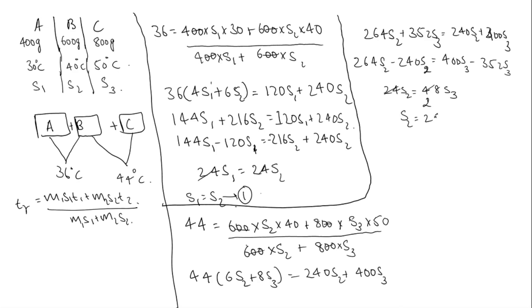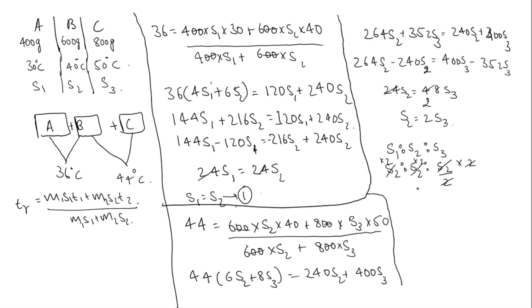So S2 equals 2 times S3. We need the ratio of S1 to S2 to S3. Since S1 equals S2 and S2 equals 2·S3, we write S1 : S2 : S3 as S2 : S2 : S2/2. Multiplying all three by 2, the ratio of S1 to S2 to S3 is 2 to 2 to 1. So the answer is option 3.